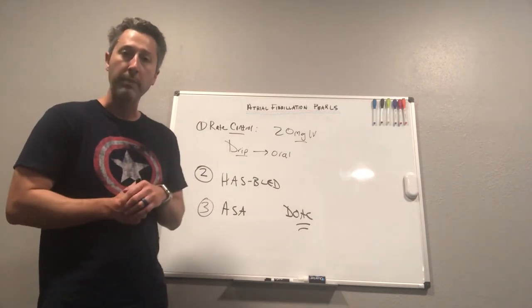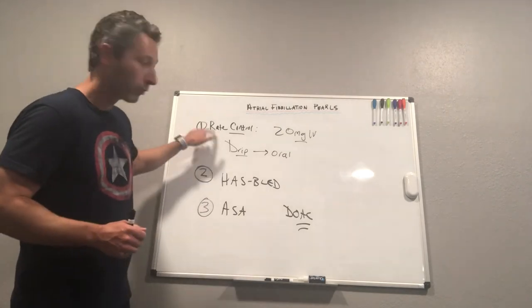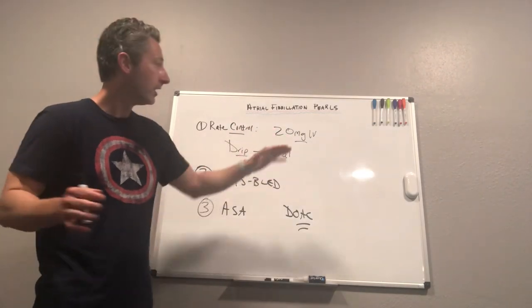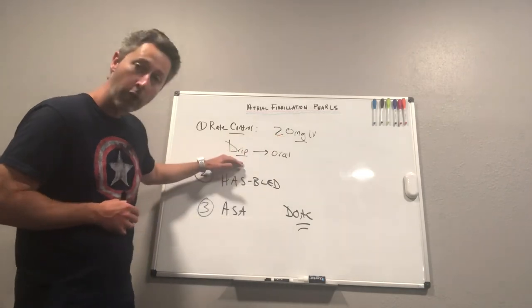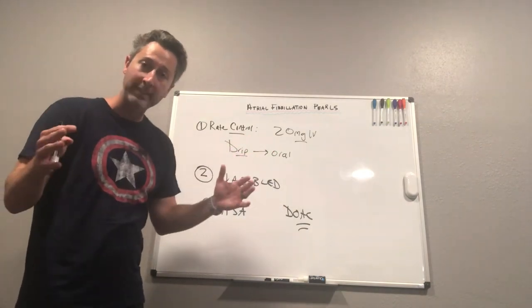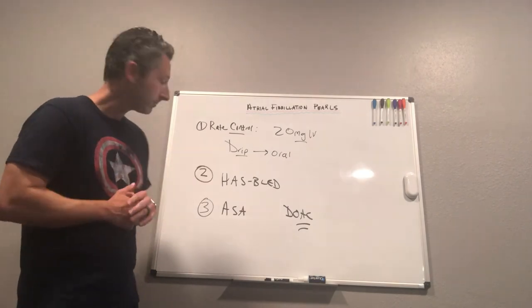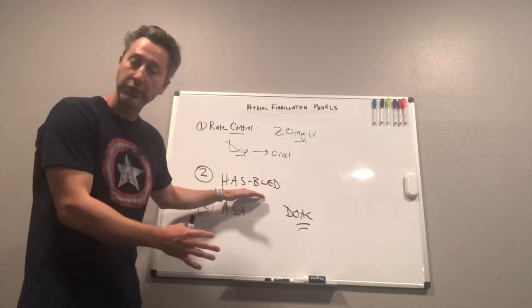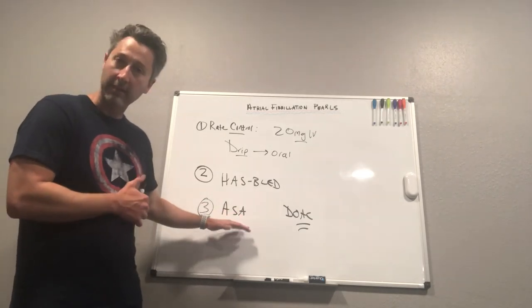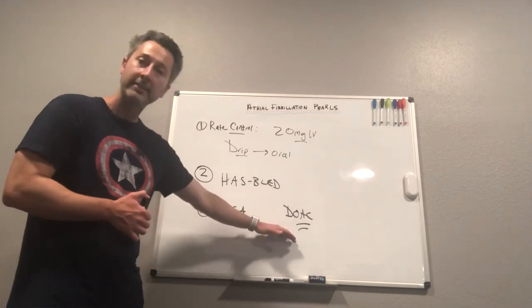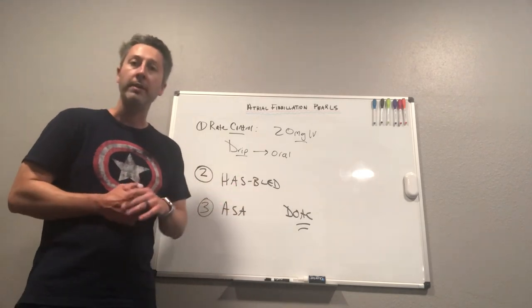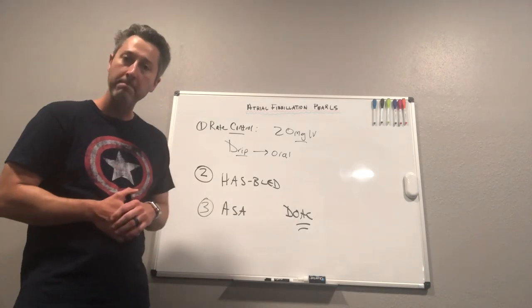So to recap: rate control, make sure you give enough IV diltiazem up front, 20 milligrams in the majority of your patients, has to be patient by patient I get that, but you want to give enough to get it under control. If you go to a drip, make sure that you overlap oral medication when that drip is coming down so that the patient always has some sort of rate control agent in their system. Utilize the has-bled score correctly, don't let it deter you from starting anticoagulant prophylaxis if they meet criteria for that. And then let's not use aspirin monotherapy for prophylaxis, let's use DOACs. If they don't want a DOAC then they can do warfarin, if they don't want either of those, aspirin plus clopidogrel is going to be your last option. All right thanks everyone.